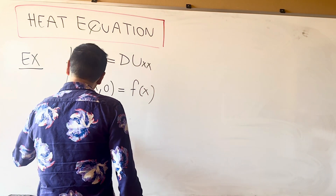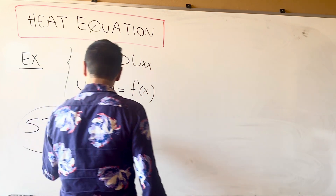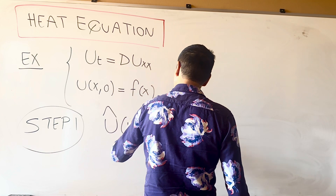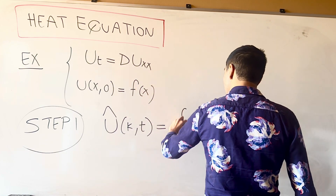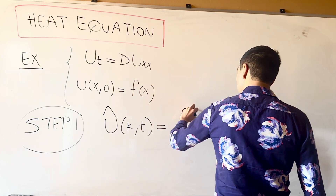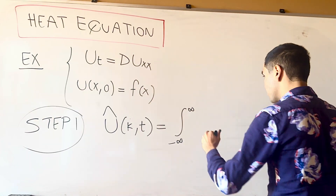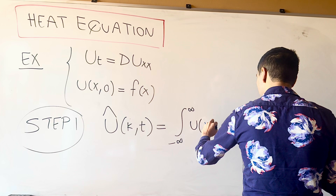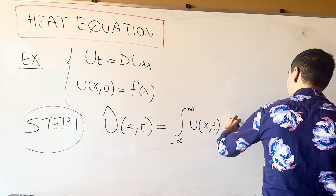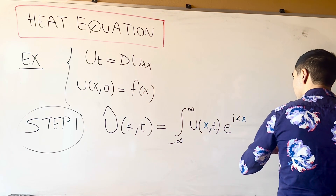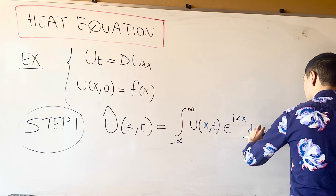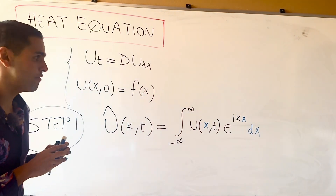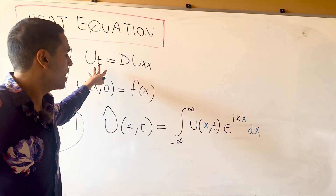More precisely, we will use the Fourier transform with respect to x. So û(κ, t) is the integral of u(x, t) times e^(iκx) dx. In other words, you fix t and integrate with respect to x.